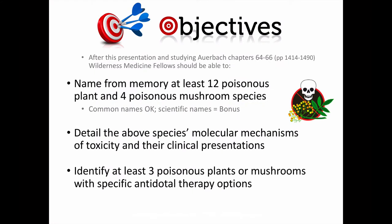And speaking of learning objectives, here they are. After watching this presentation and studying the relevant supporting materials, learners should be able to name at least 12 poisonous plant and 4 poisonous mushroom species — common names are okay, but scientific names get you bonus points. Provide details on the molecular mechanisms of toxicity when known, describe their clinical presentations, and identify at least 3 poisonous plants or mushrooms that have specific antidotal therapies.